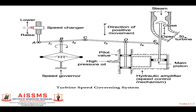Similarly, if we move the speed changer in the upper side — that is, in the upward direction — A moves upward, B downward, C upward, D downward. When D moves downward, the high-pressure oil moves in that direction and the piston moves in the upward direction. Due to this upward movement, the steam valve moves toward closure — that is, the rate of flow of steam is decreased. Due to the decrease in steam flow, the turbine speed decreases, and due to the decrease in turbine speed, the generator rotates at a lower speed — that is, frequency and active power are decreased.